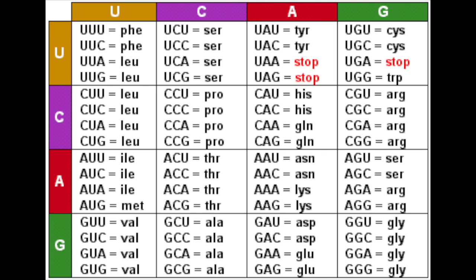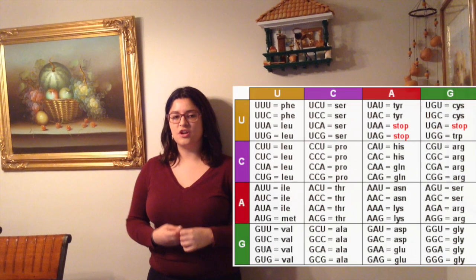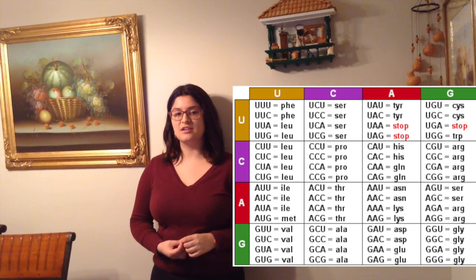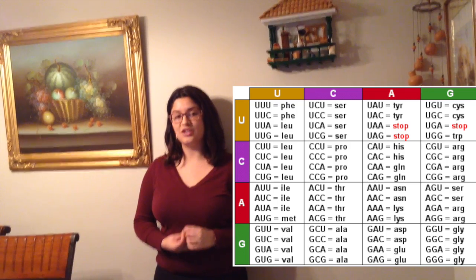The initiation and termination of the amino acid chain is determined by specific start and stop codons. Start codons include AUG, which codes for the amino acid methionine. Stop codons include UAA, UGA, and UAG.